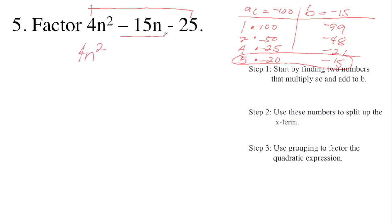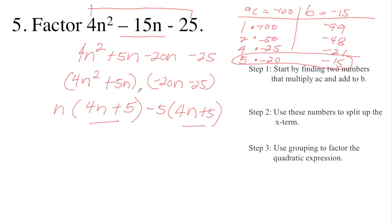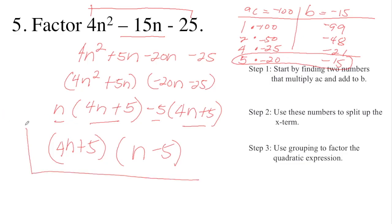Copy the first term 4N squared. Split negative 15N using plus 5N and minus 20N. Copy the last term, negative 25. Group the first and second terms: 4N squared plus 5N. GCF is N, giving 4N plus 5. Third and fourth: negative 20N minus 25. GCF is negative 5, giving 4N plus 5. Factor out the common term 4N plus 5, and multiply by the remaining terms N minus 5. Therefore the final answer is (4N + 5)(N − 5).